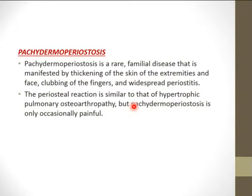Pachydermoperiostosis affects both skin and bone — there will be thickening of the skin of the extremities and face with clubbing of the fingers and widespread periostitis. The periosteal reaction is similar to that of hypertrophic pulmonary osteoarthropathy, but pachydermoperiostosis is sometimes painful while hypertrophic pulmonary osteoarthropathy is usually painless.